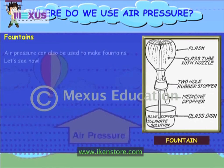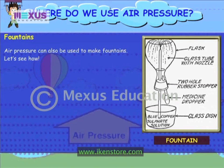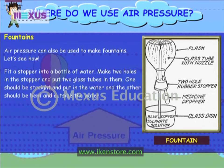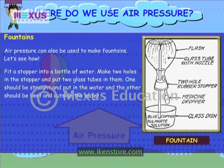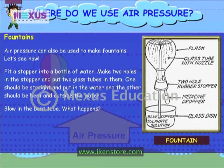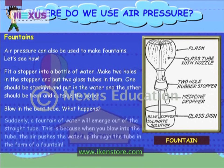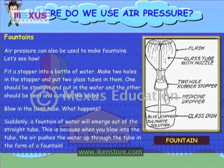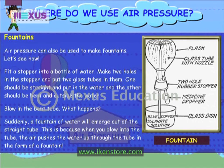Fountains. Air pressure can also be used to make fountains. Fit a stopper into a bottle of water. Make two holes in the stopper and put two glass tubes in them — one should be straight and placed in the water, and the other should be bent and outside the water. Blow into the bent tube and a fountain of water will emerge out of the straight tube. This is because when you blow into the tube, the air pushes the water up through the tube in the form of a fountain.